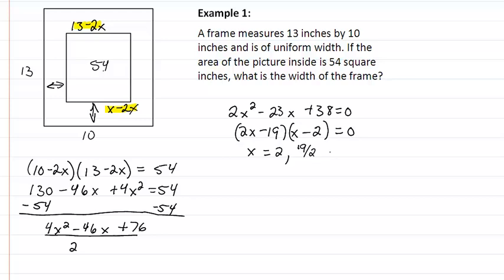Now the 19 halves equals about 9.5. This is a problem when we go back to our original equation, because we had 10 minus 2X. If we take 10 minus 2 times 9.5, we are going to get a negative number. So that means this is not a possible solution for us, and our solution is going to be 2 inches.